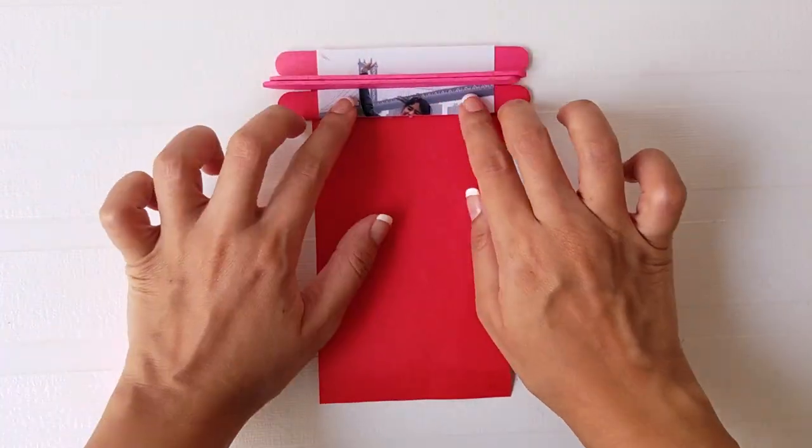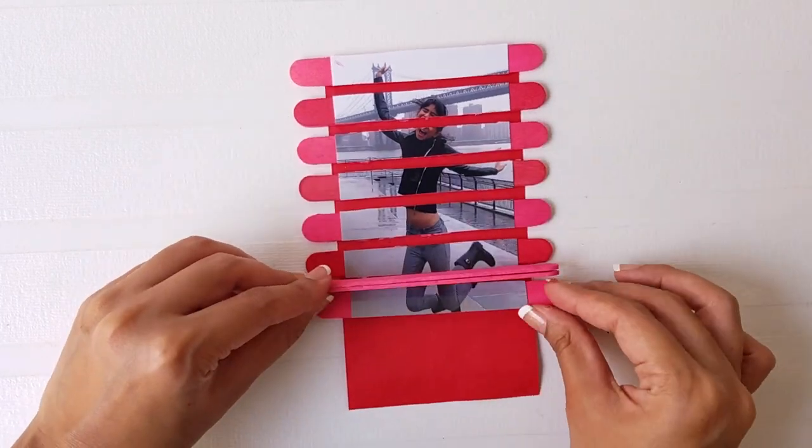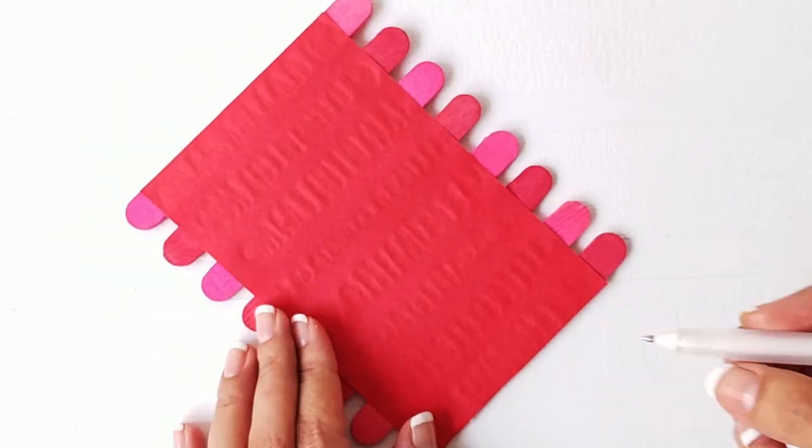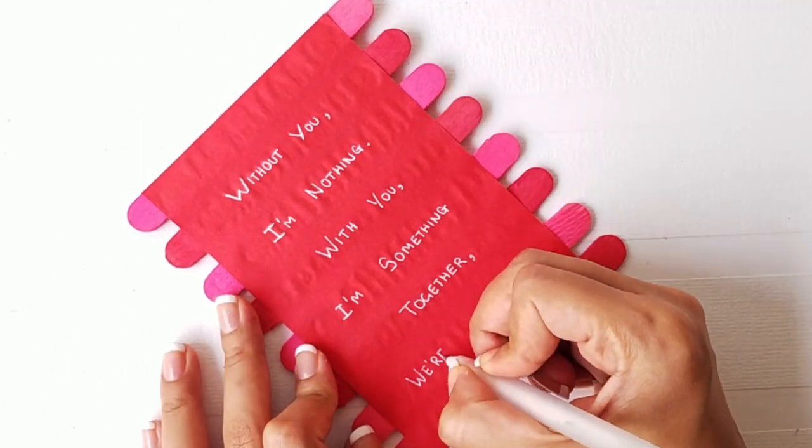Take a strip of paper and glue all the sticks on it by leaving a gap of two sticks between each one. Write a sweet note or poem on the reverse side.